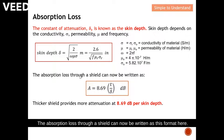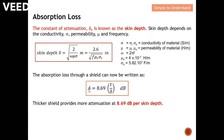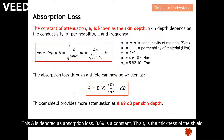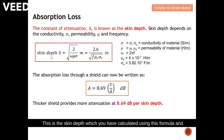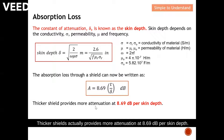The absorption loss through a shield can now be written as: A = 8.69 × (t/δ), where A denotes absorption loss, 8.69 is a constant, t is the thickness of the shield, and δ is the skin depth calculated using the formula. Thicker shields provide more attenuation at 8.69 dB per skin depth.